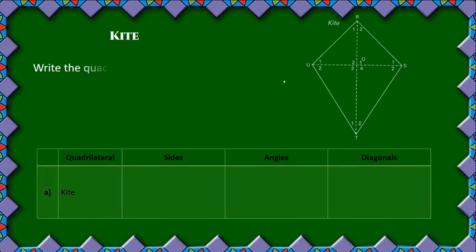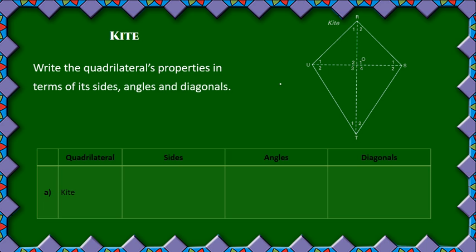Next up we have a kite. Writing its properties, starting off with the sides: with the kite, these two adjacent sides are equal, and these two adjacent sides are equal. So we write down that RU is equal to RS, and UT is equal to TS.